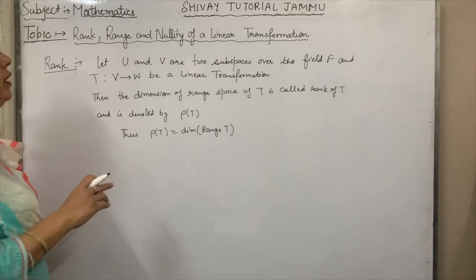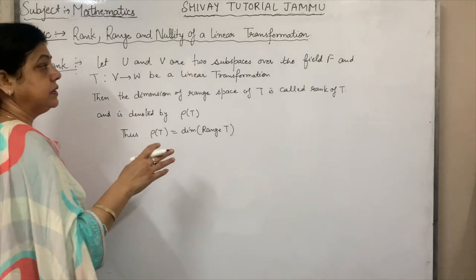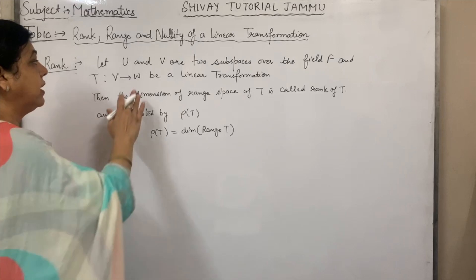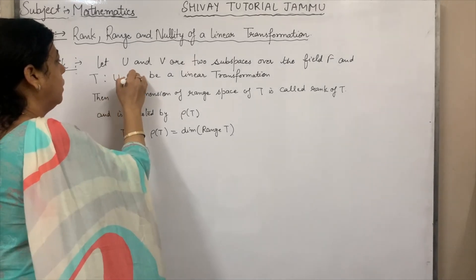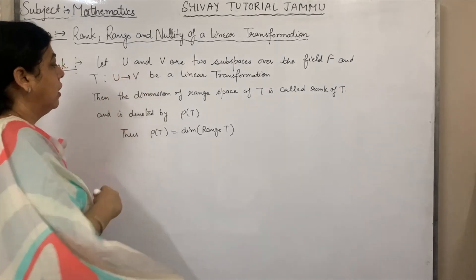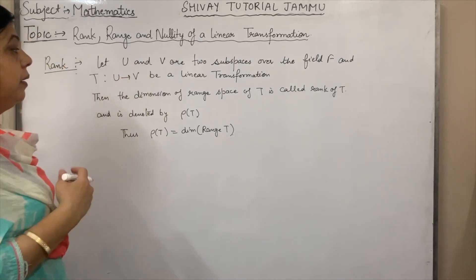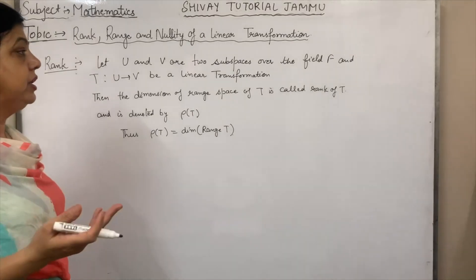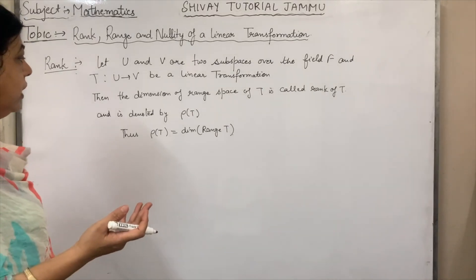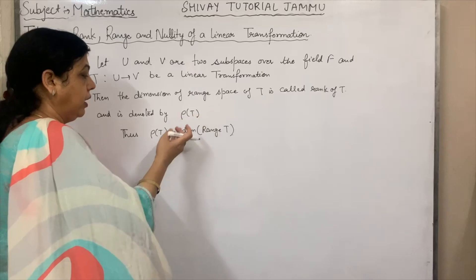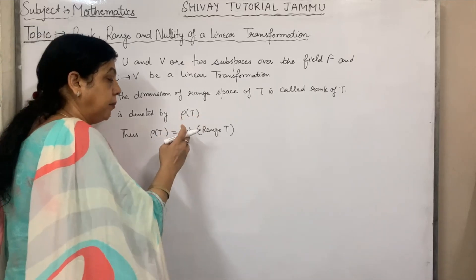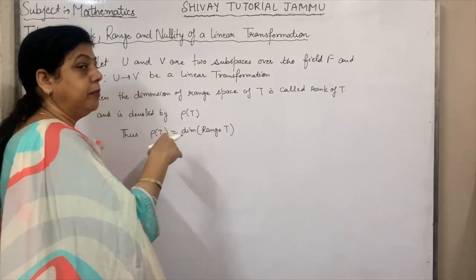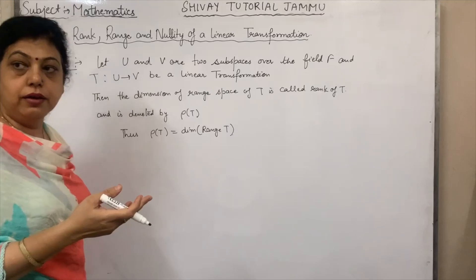If U and V are two subspaces over the field and T is a transformation from U to V, then the dimension of the range space is called rank of T, and it is denoted by ρ of T. That is, dimensions of range space means number of elements in the range space.